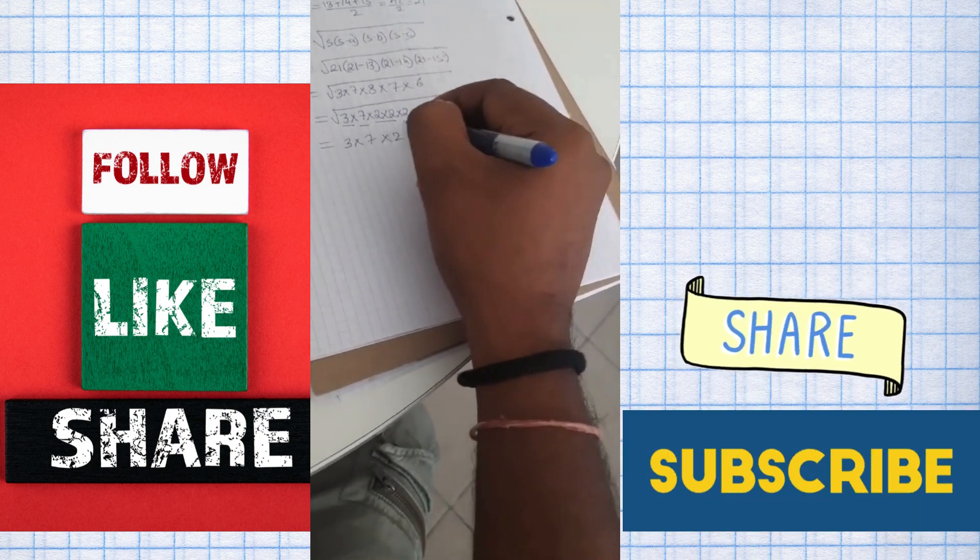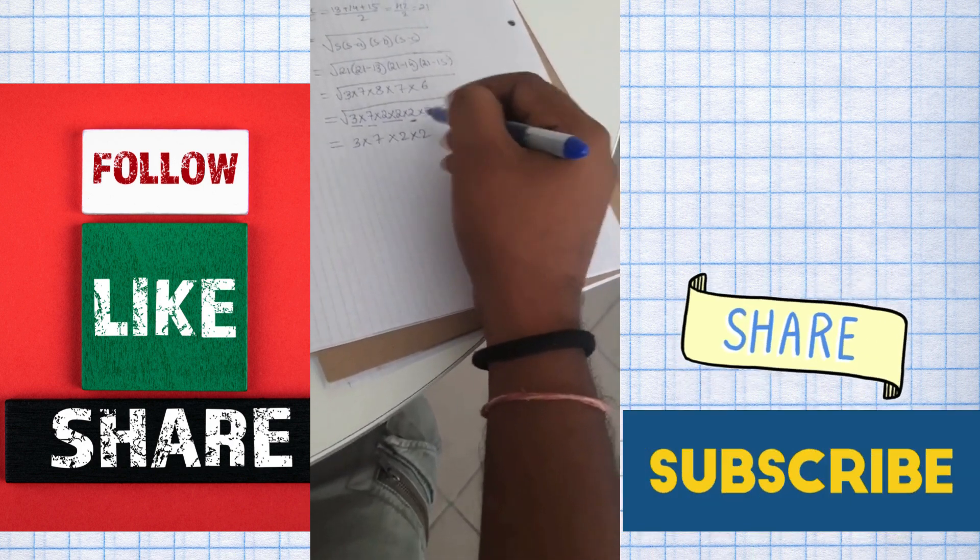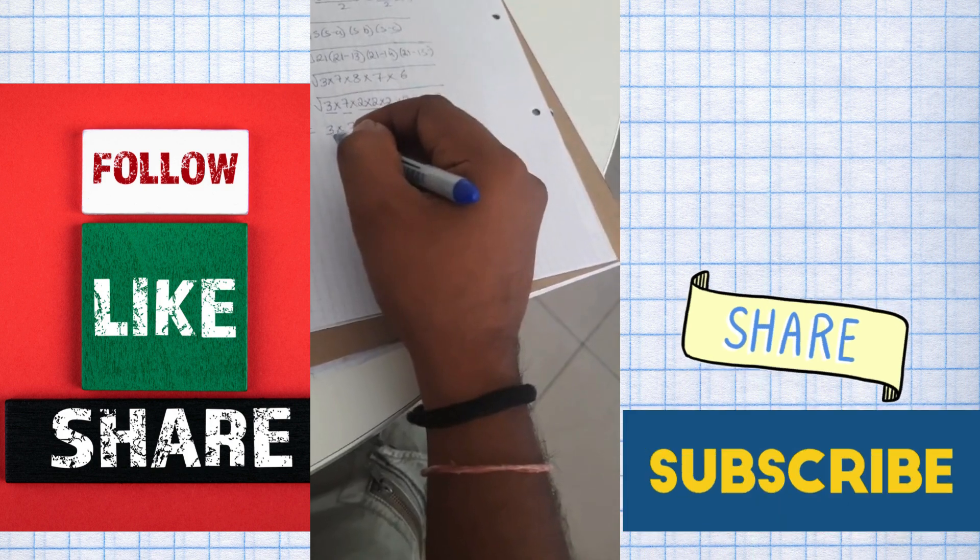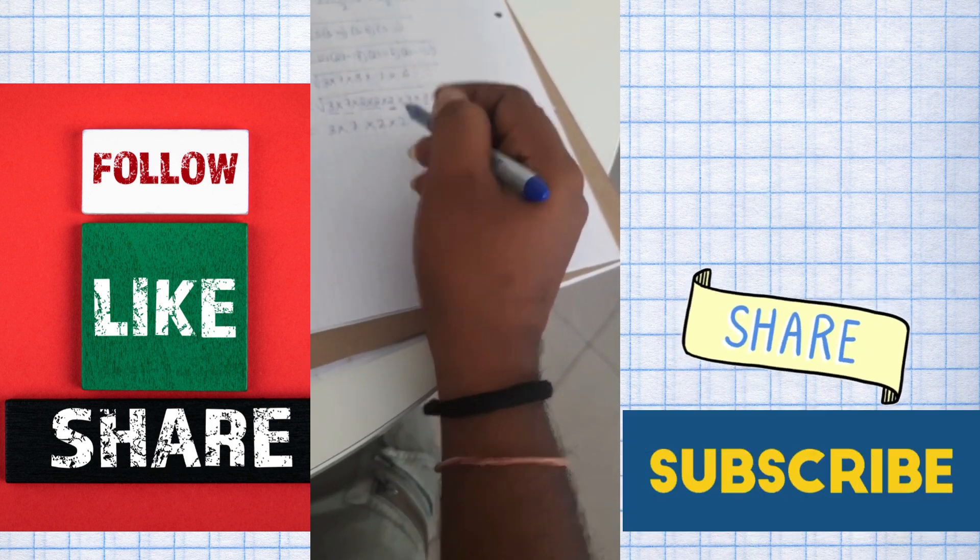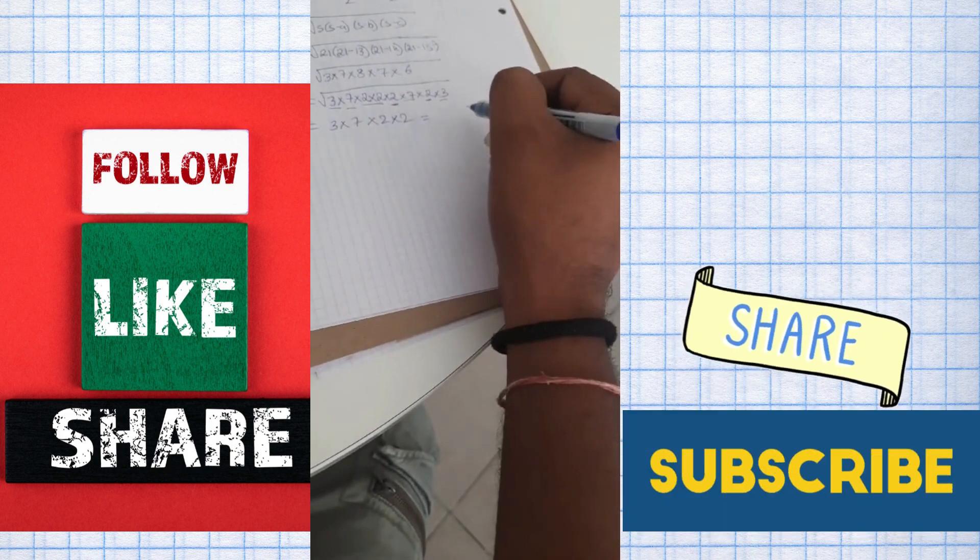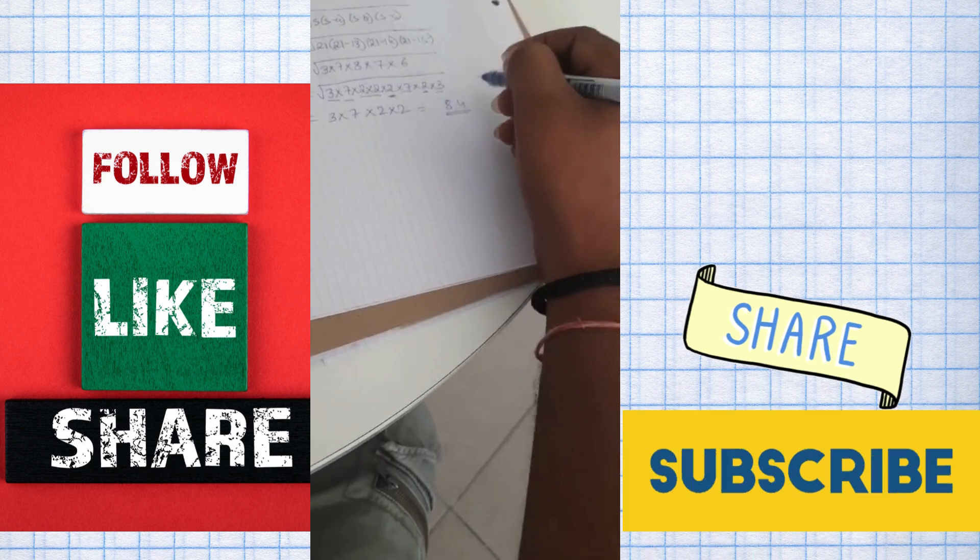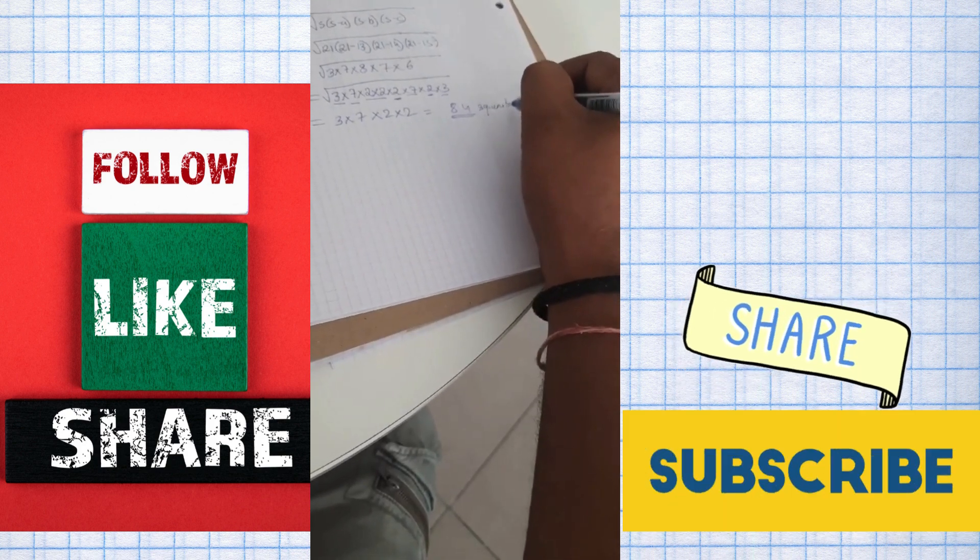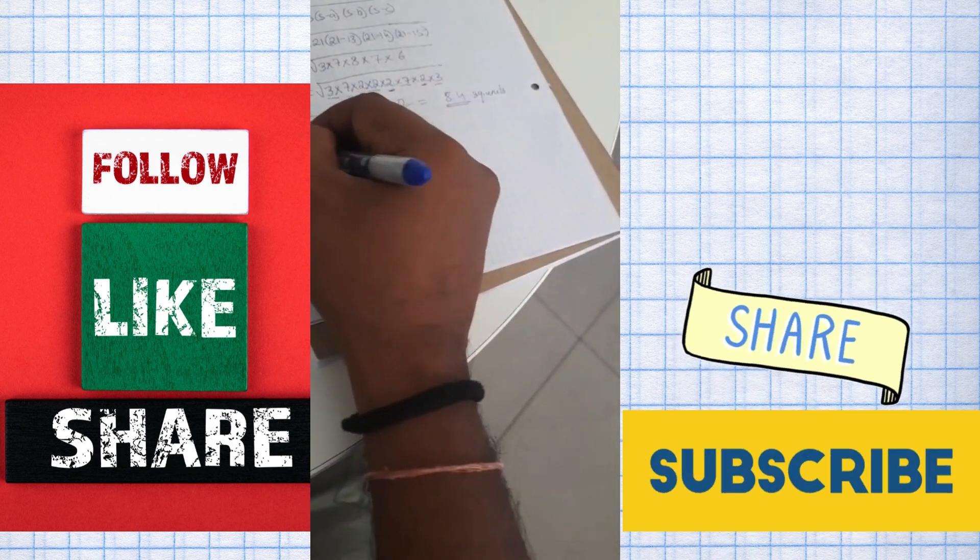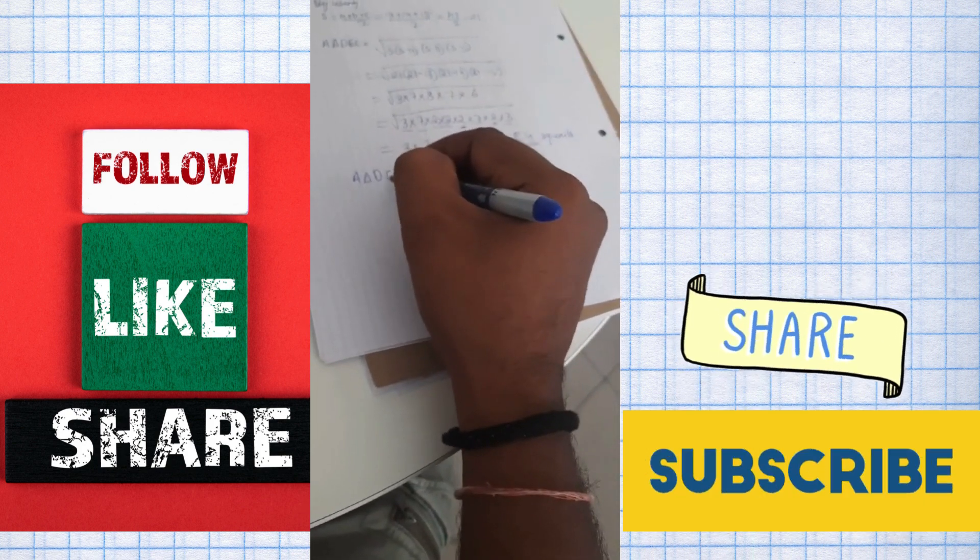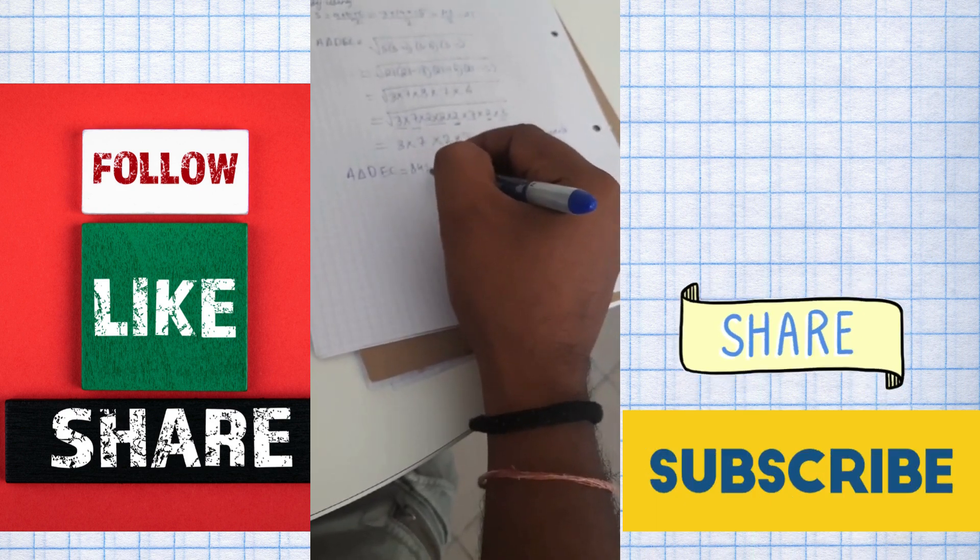This is 1, 7, 7. That comes out of square root and becomes 1, 2, 7. This is 2 and this part is 2. So nothing left in the radicand. So we have 21 into 4, 84 square units.